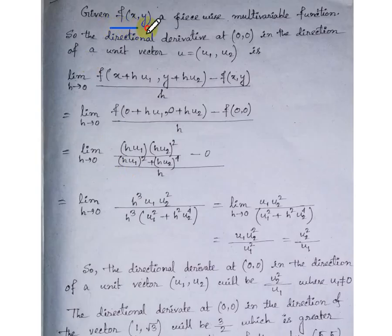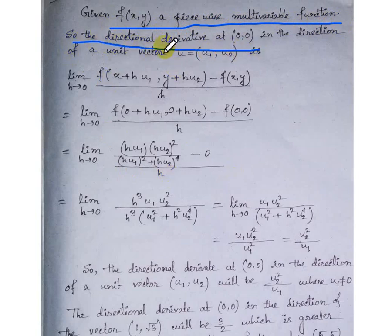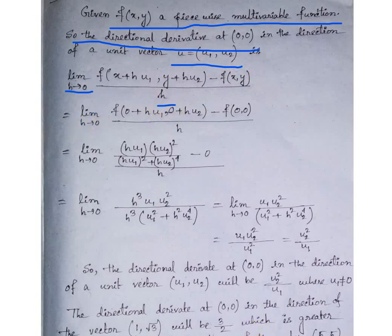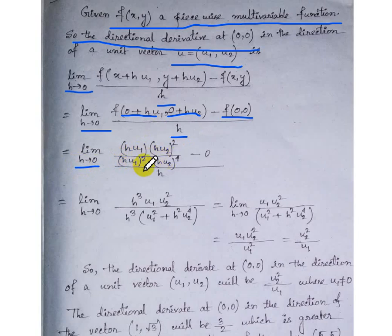For the solution, f(x,y) is a piecewise multivariable function. The directional derivative at (0,0) in the direction of unit vector u is computed using the limit definition: lim(h→0) [f(0 + hu₁, 0 + hu₂) - f(0,0)] / h.